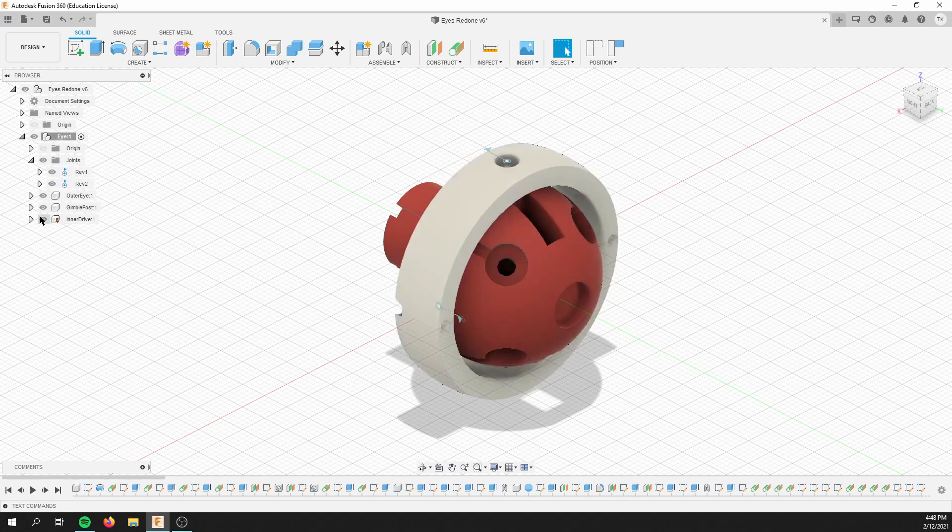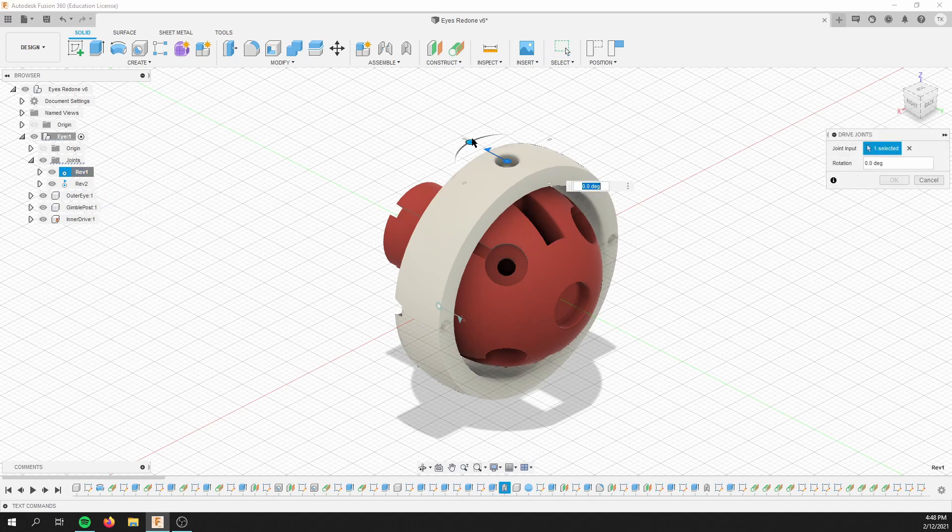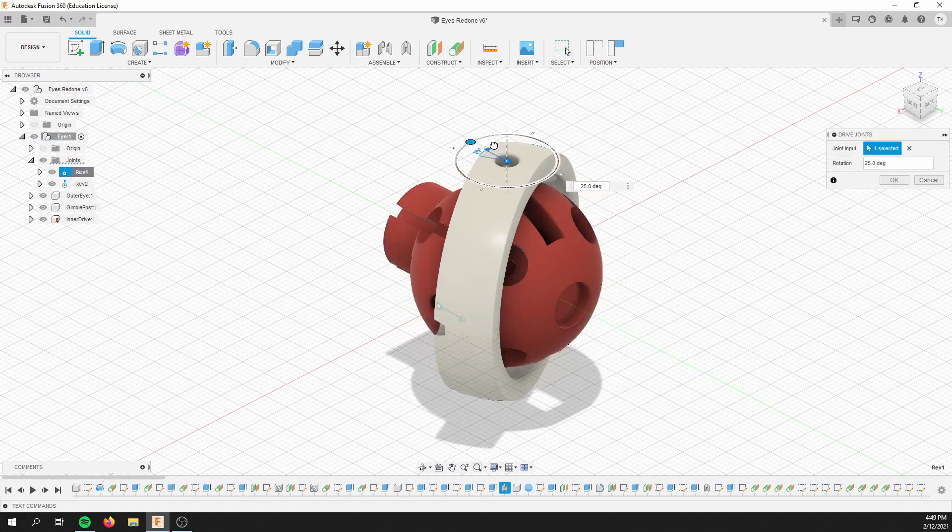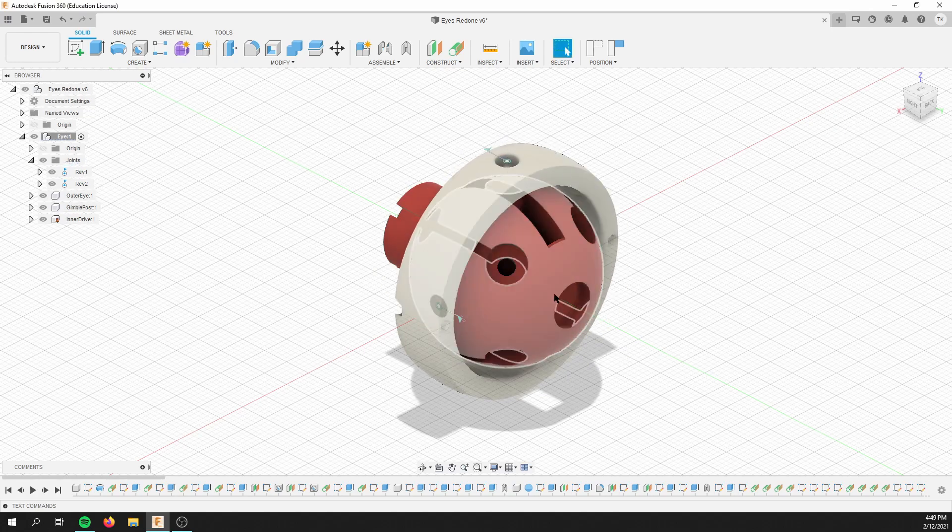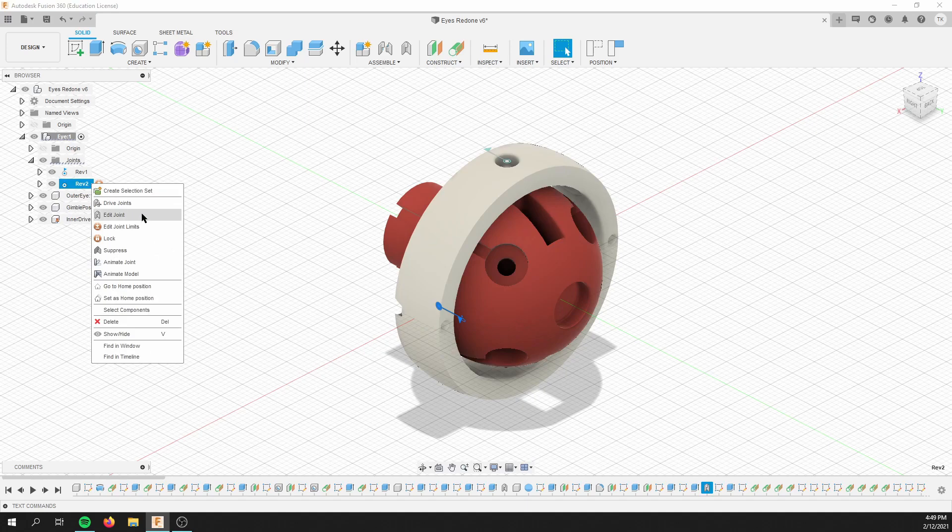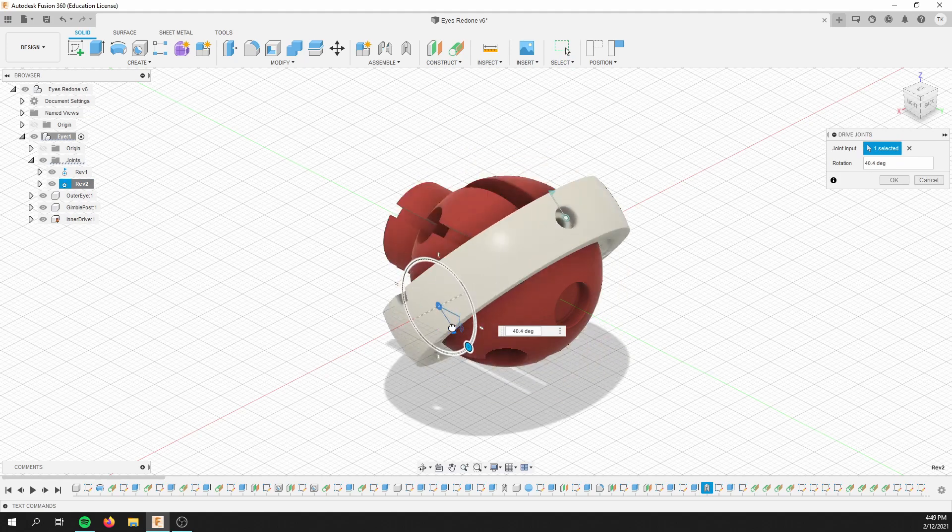So a joint that can turn. And that is connected via a M2 screw. And if we look at it, you can see it turns this way. Then the post is connected to the inner eye by another joint, which is another M3 screw. And it turns the outer eye this way.